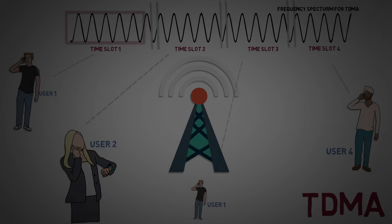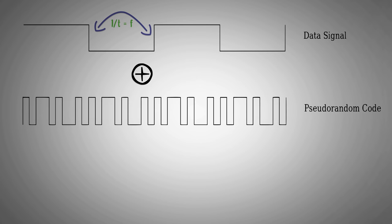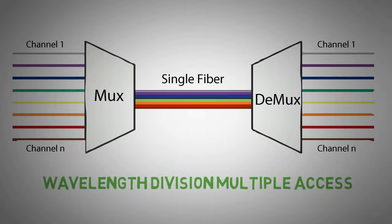So today we showed what were the different multiple access techniques that were used in various generations of wireless communication.